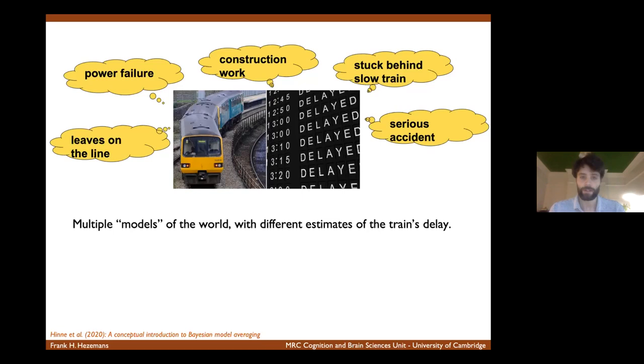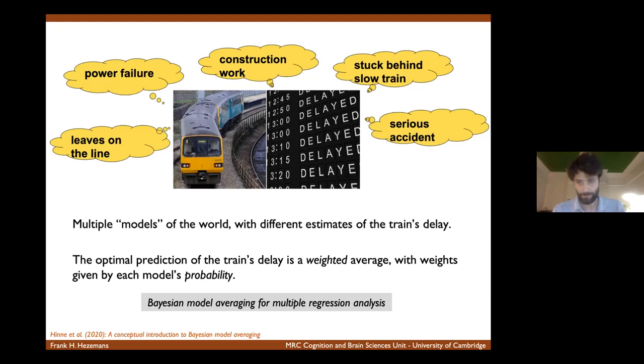But another approach would be to take all of these different scenarios and compute a weighted average of them using each model's probability as the weight. And this approach introduces what I want to talk about today, which is Bayesian model averaging in the context of multiple regression analysis.